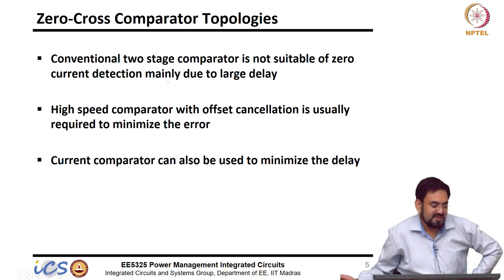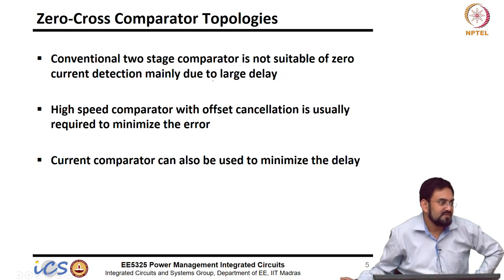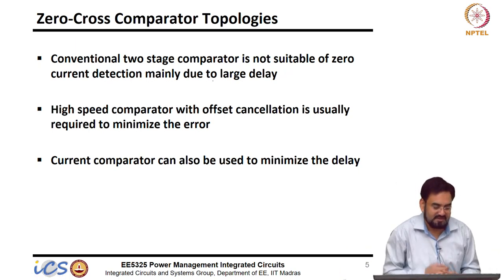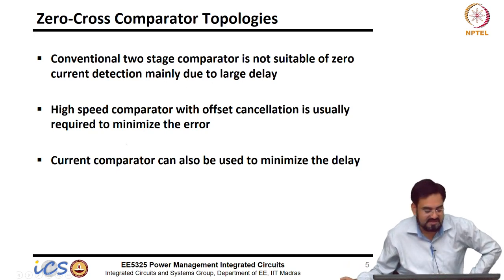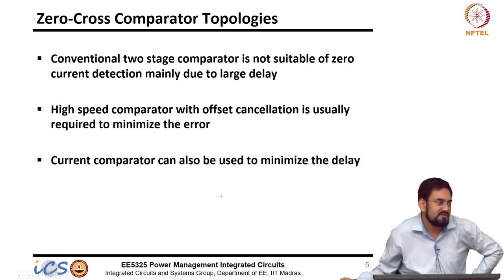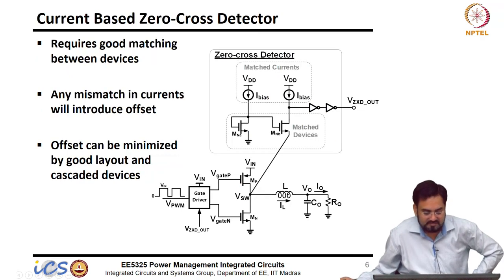There are different topologies you can use. Conventional two-stage will not be suitable, mainly due to large delay, because the more stages you have means more delay. A high-speed comparator with offset cancellation is usually required to minimize the error. Most of the time we try to use a current comparator or inverter-based approach.